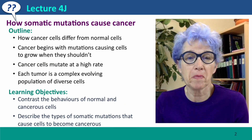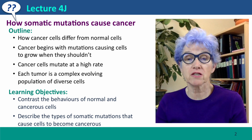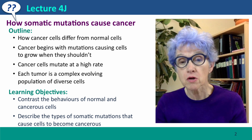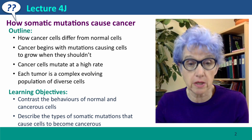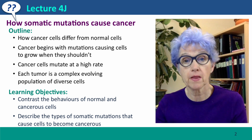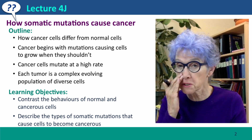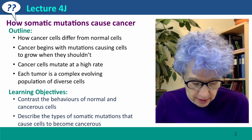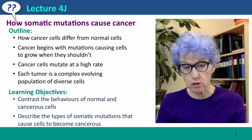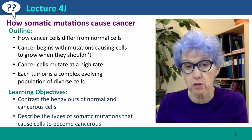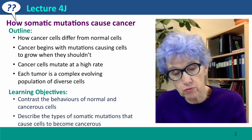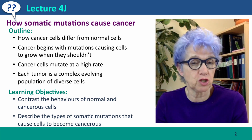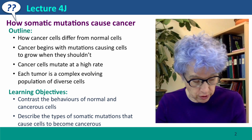Hi everyone. Welcome back to Lecture 4J of Useful Genetics, where we're going to talk about how somatic mutations cause cancer. We'll talk about how cancer cells differ from normal cells and how cancer begins with mutations that cause cells to grow when they shouldn't. We'll also talk about mutation rates in cancer cells and about the very complex genetic structure of tumors.